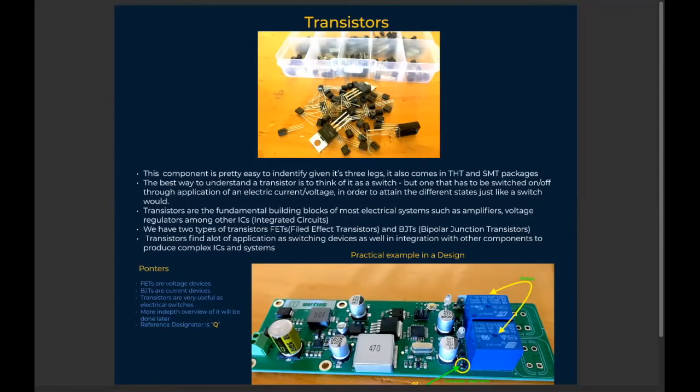So most voltage regulators and some ICs, and of course most ICs do have transistors in them. We do have two types of transistors: FETs and BJTs - the field effect transistors and bipolar junction transistors.